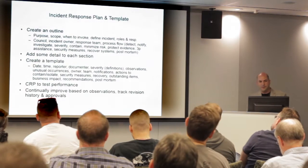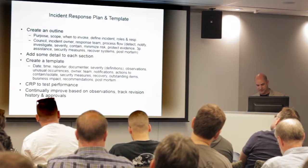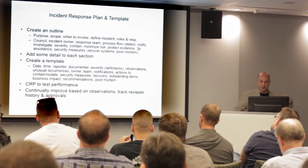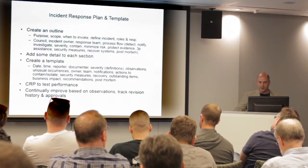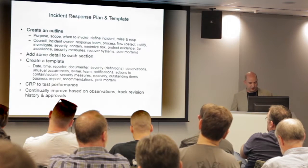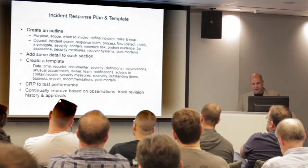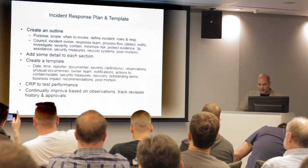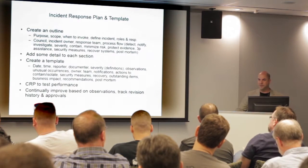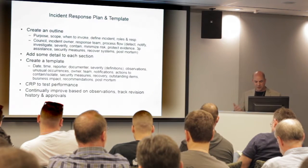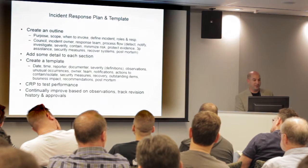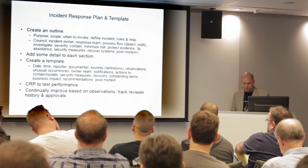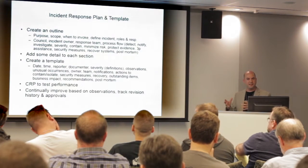Incident response plan — this is an important one to have, and there are plenty of templates out there. It needs to have its purpose, scope, when you should invoke it, and your definition of an incident, since different people have different impressions. Any incidents go before the Information Security Council or someone who might care about it. You should have an incident owner — when something happens, who's the person in charge of this? You have a response team, so you want to define all this stuff ahead of time, so that when there's a no-shit moment you already kind of thought about it. You don't have to think of everything — my crystal ball's been broken for seven years — but you can get part of the way there.